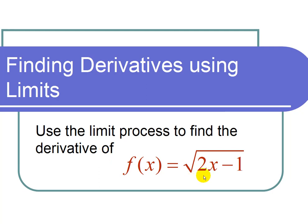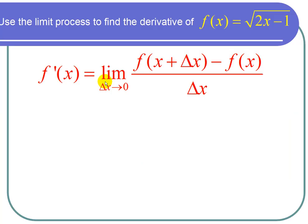So first let's recall the definition of the derivative, which states that f prime of x is equal to the limit as delta x approaches 0 of f of x plus delta x minus f of x all over delta x.